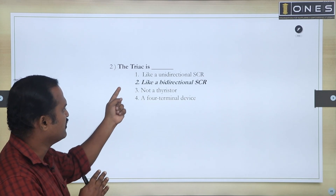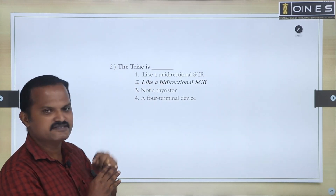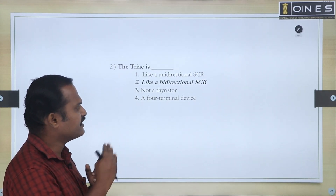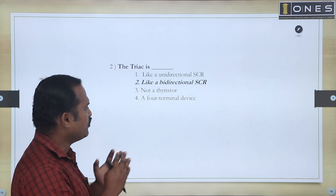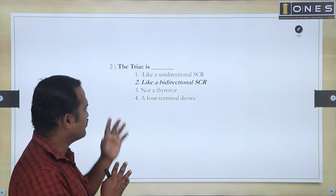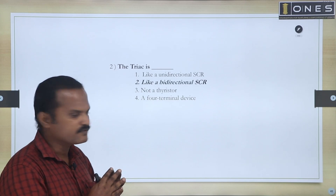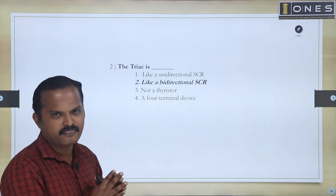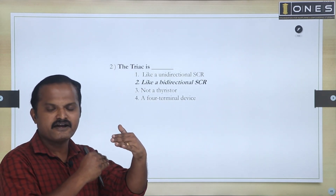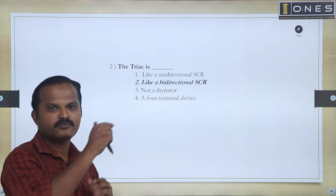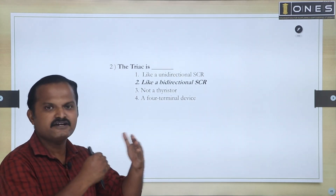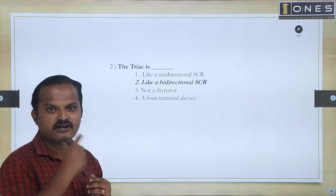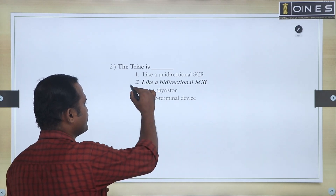TRIAC: the first choice is like a unidirectional SCR; the second choice is like a bidirectional SCR; the third choice is not a thyristor; and the fourth choice is a four-terminal device. Two SCRs connected in anti-parallel with gate terminals shorted gives a TRIAC. It can be controlled from both sides. So the answer is the second choice — it is like a bidirectional SCR.